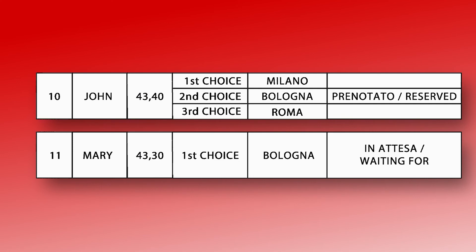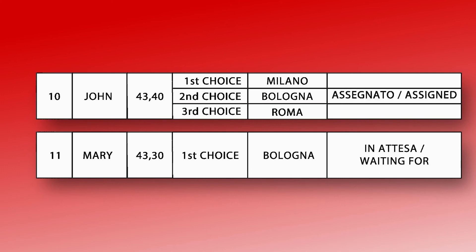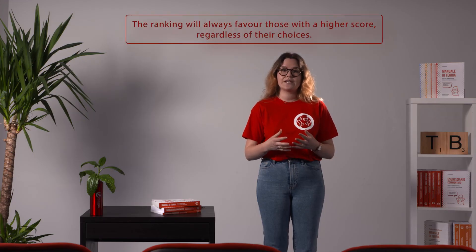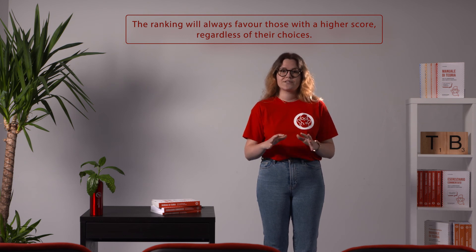John is reserved for Bologna because Milan has either assigned or reserved all its available spots. However, Bologna is saving a spot for him. If Milan freed a spot for John, he'd become assigned to Milan. On the contrary, if Milan ran out of all available spots, John would become assigned to Bologna and he should enroll. The take-home message of this video is that the ranking list will always favor those with a higher score, regardless of their choices.